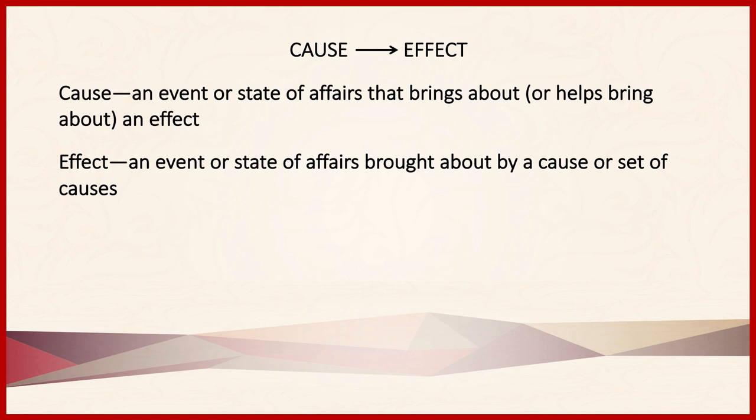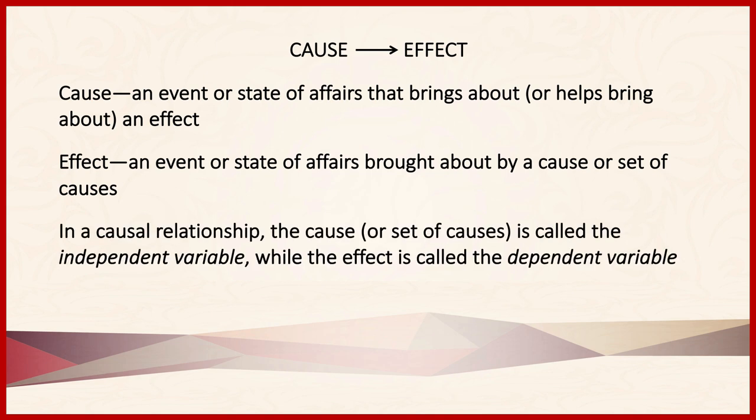Very frequently, we'll refer to causes and effects in terms of variables. Within a causal relationship, a cause or a set of causes will be called the independent variable, while the effect is called the dependent variable. So, if pressing a button causes a bell to ring, then pressing the button is the independent variable — it was not brought about by anything within the causal relationship in question — while the bell ringing is the dependent variable, as its occurrence depends on the independent variable.